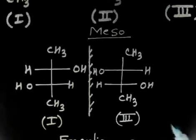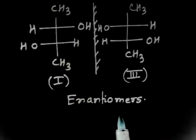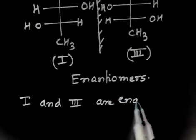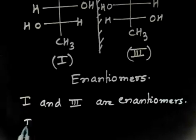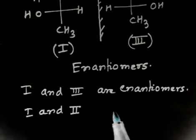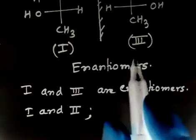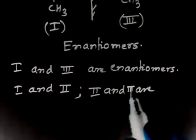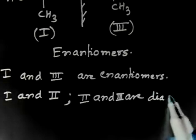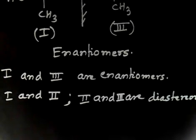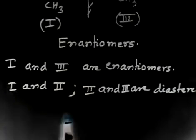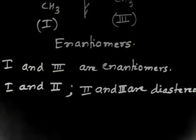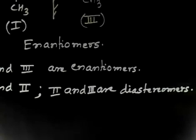So I can say: one and three are enantiomers. But compound two is meso, so compound two is a diastereomer with one, and also a diastereomer with three. So we have one enantiomeric pair — that is one and three — and two diastereomeric pairs: one and two, and two and three. These are easy problems.